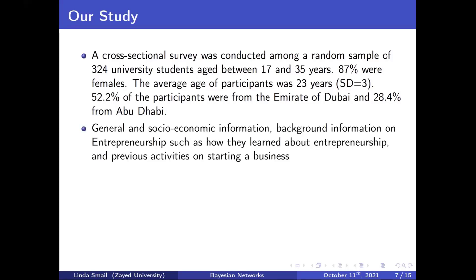Our questionnaire had three parts. The first covered general socio-demographic and socio-economic questions: background information including age, gender, marital status, education, and major. We also asked whether students worked part-time or full-time, and about their parents' level of education, work, and job sector — to later use this information in finding different factors.